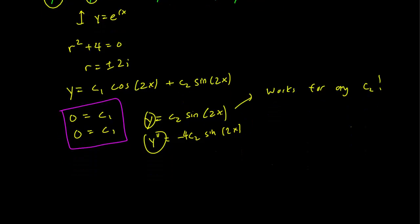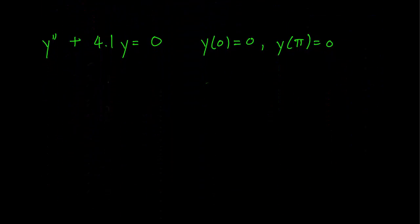Let's look at a slightly different endpoint problem. It's exactly the same as the last one, except that instead of a 4, we have a 4.1. The endpoint values are the same, y(0) = 0 and y(π) = 0.